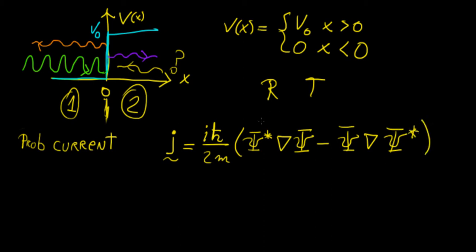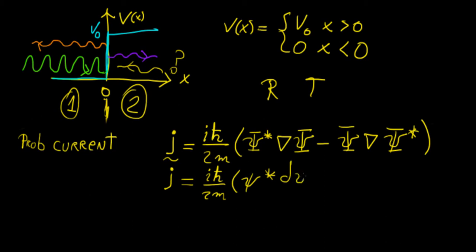This looks a little complicated, but in our case, because we're dealing with a one-dimensional problem, we can reduce the probability current to the following expression: j = (iℏ)/(2m) times [ψ* (dψ/dx) minus ψ (dψ*/dx)].